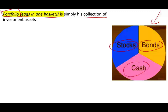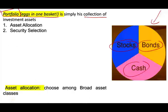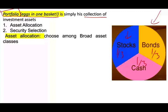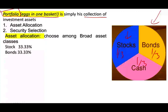One is called asset allocation, and the other one is security selection. Asset allocation is when you choose among broad asset classes. For example, here we are choosing one-third in stocks, one-third in bonds, and one-third in cash. So 33.33% stocks, 33.33% bonds, and 33.33% in cash — that's the asset allocation. Obviously it doesn't have to be this way; we could add mutual funds, commodities, and so on.